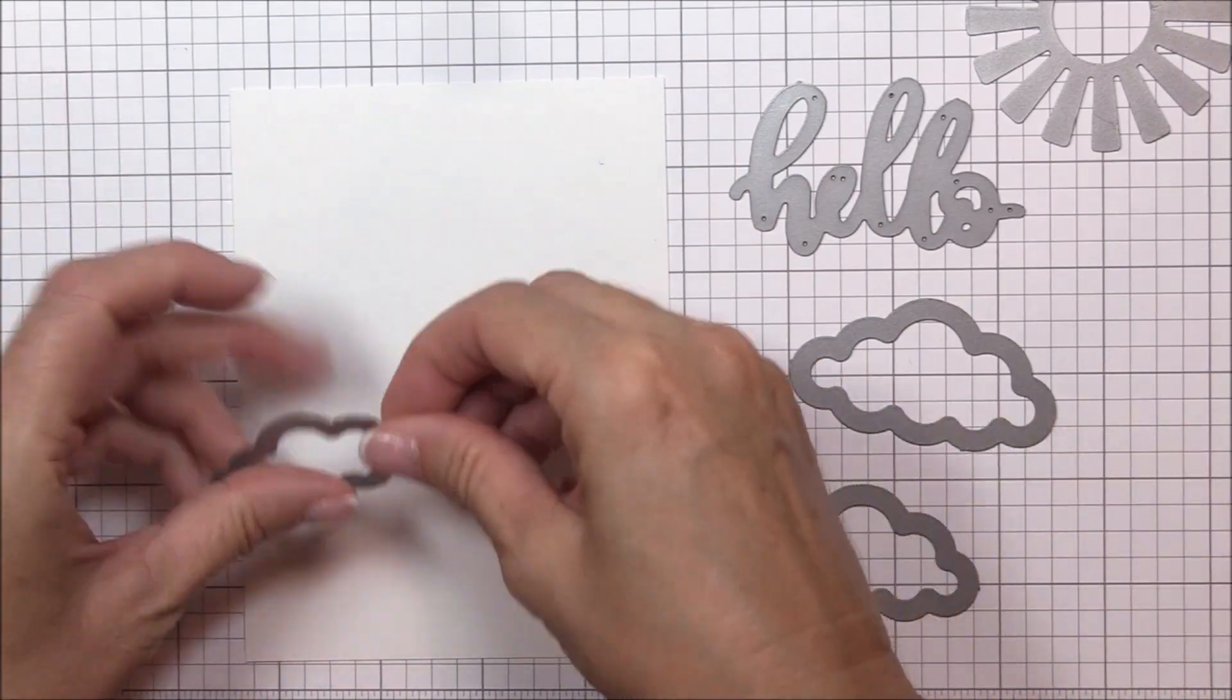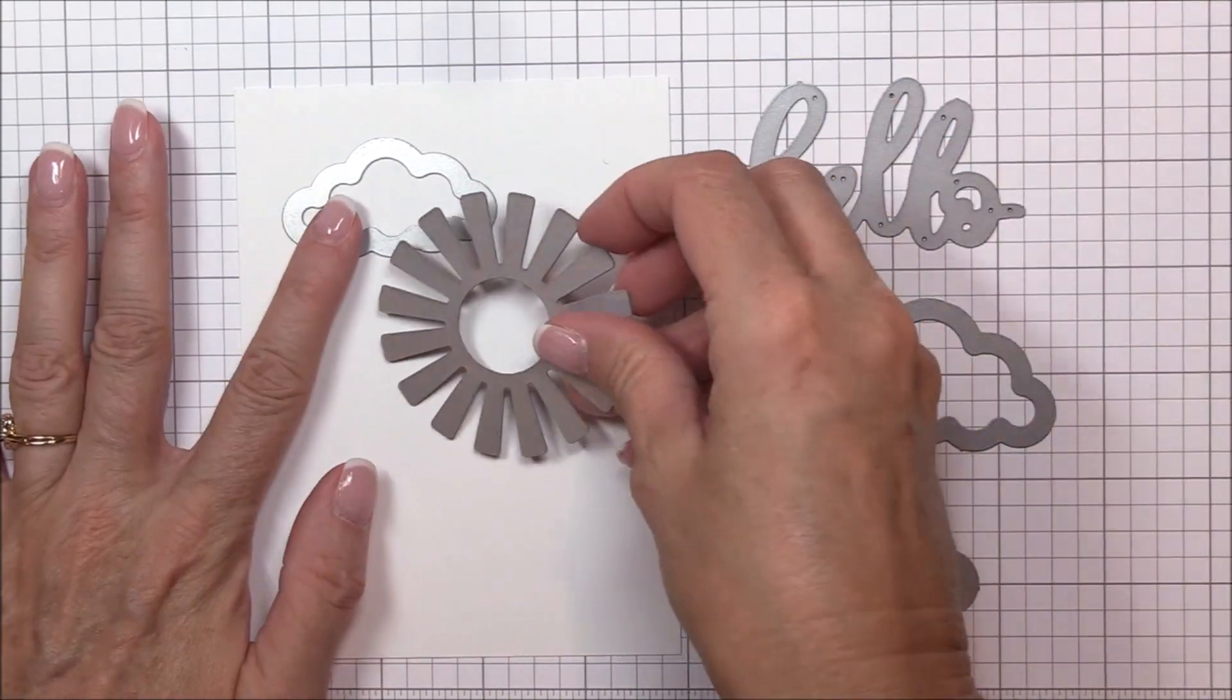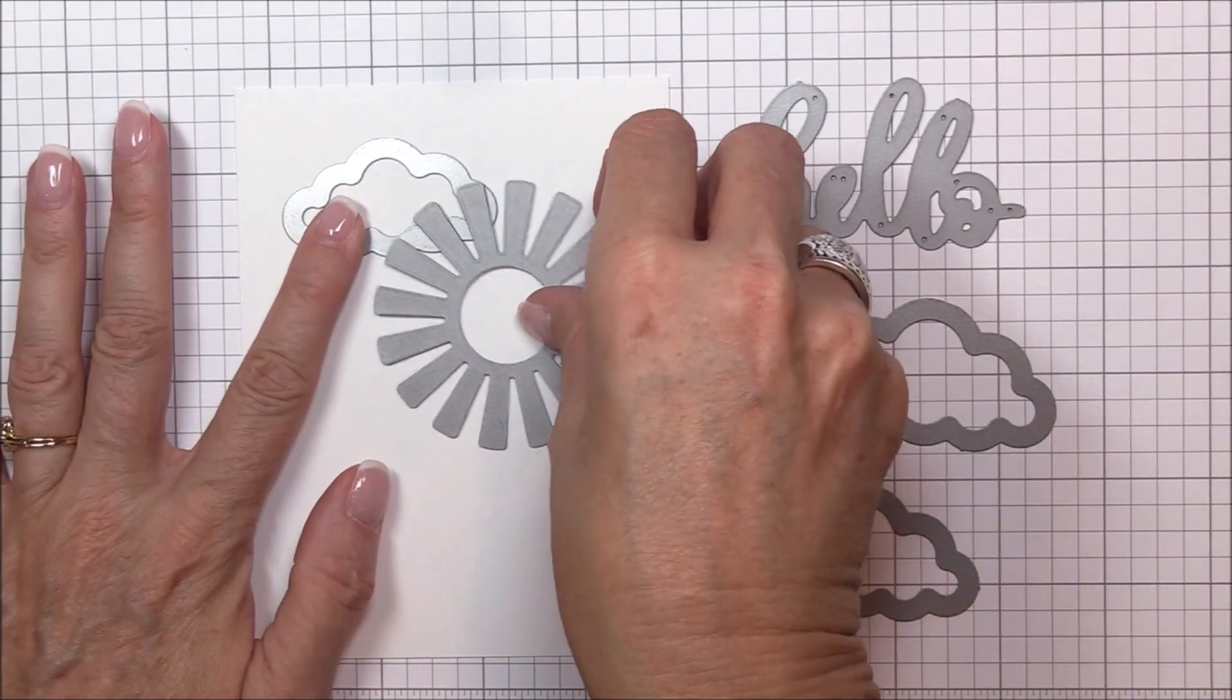Inlaid die cutting is a super fun way to create depth and dimension without the actual bulk of dimension, which makes your projects way more postage friendly. Let's get started.